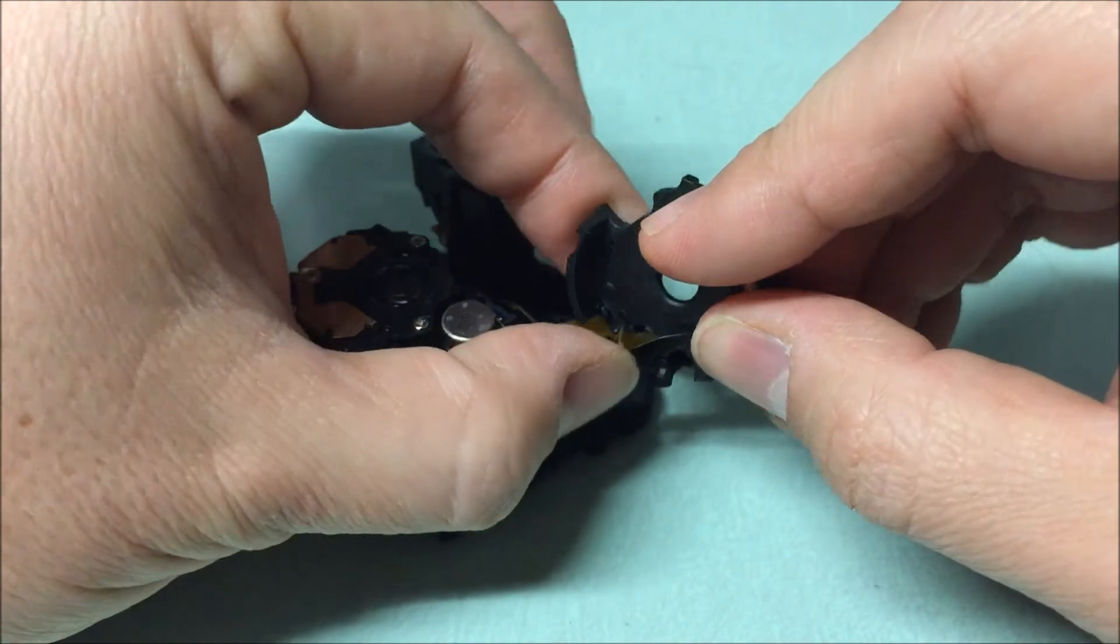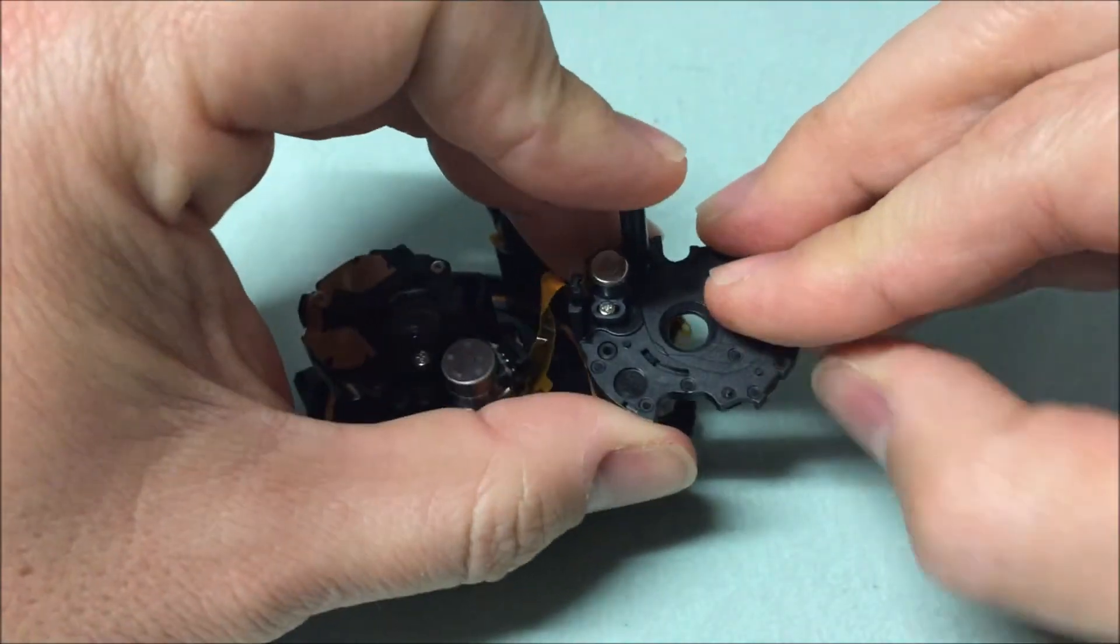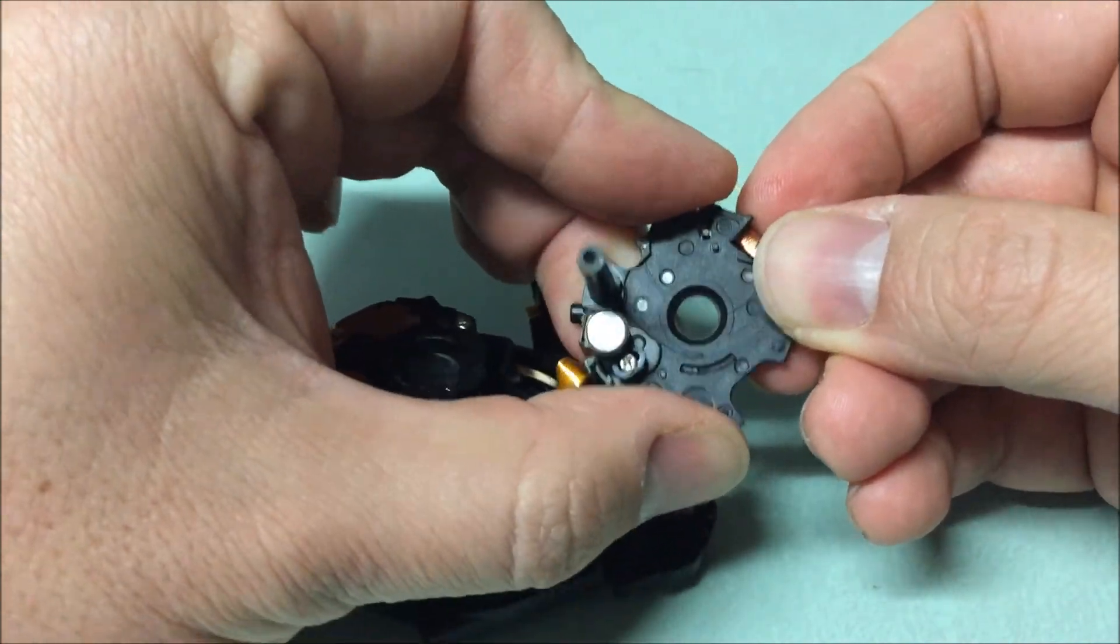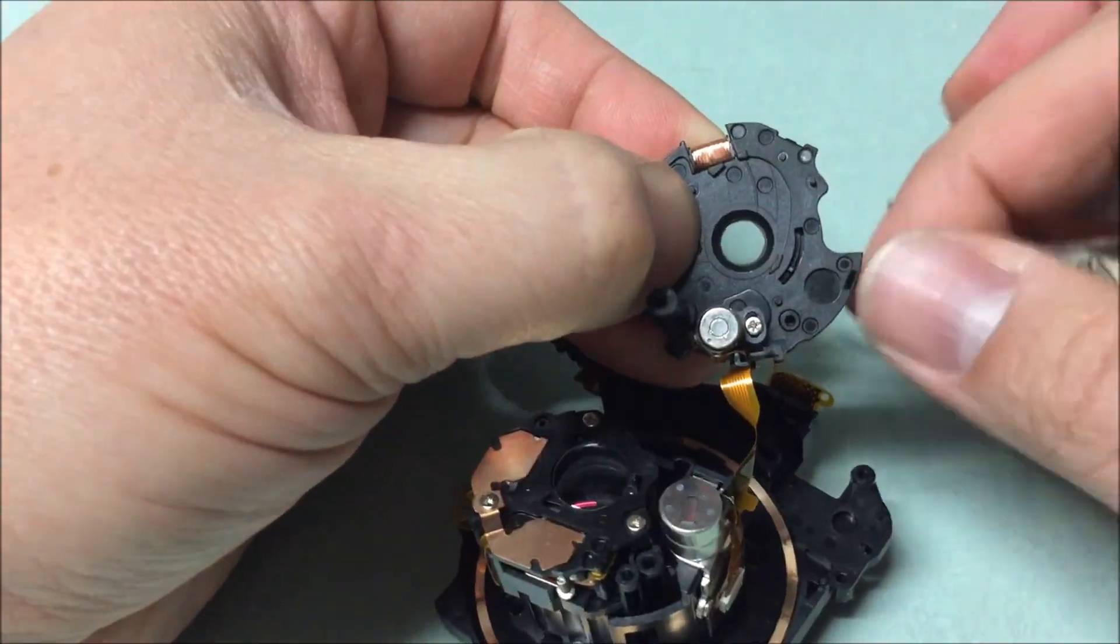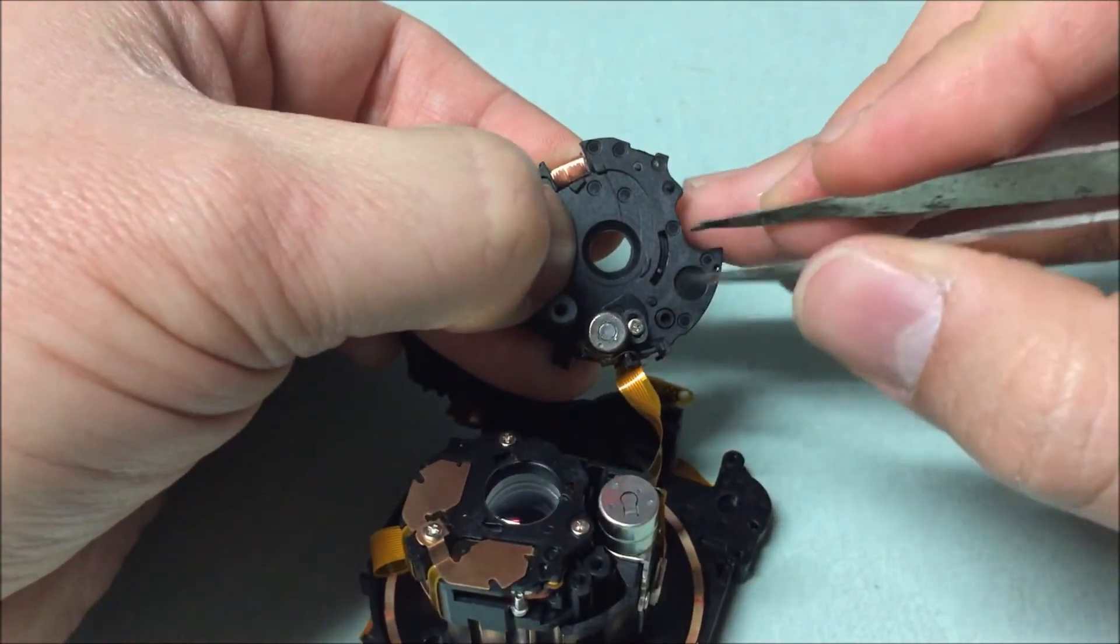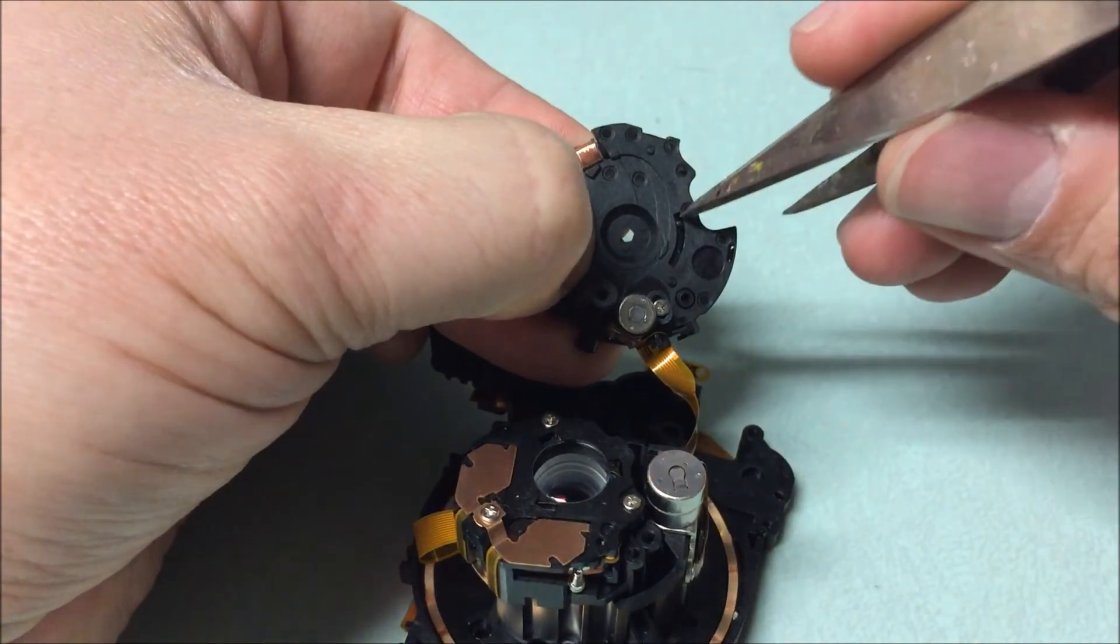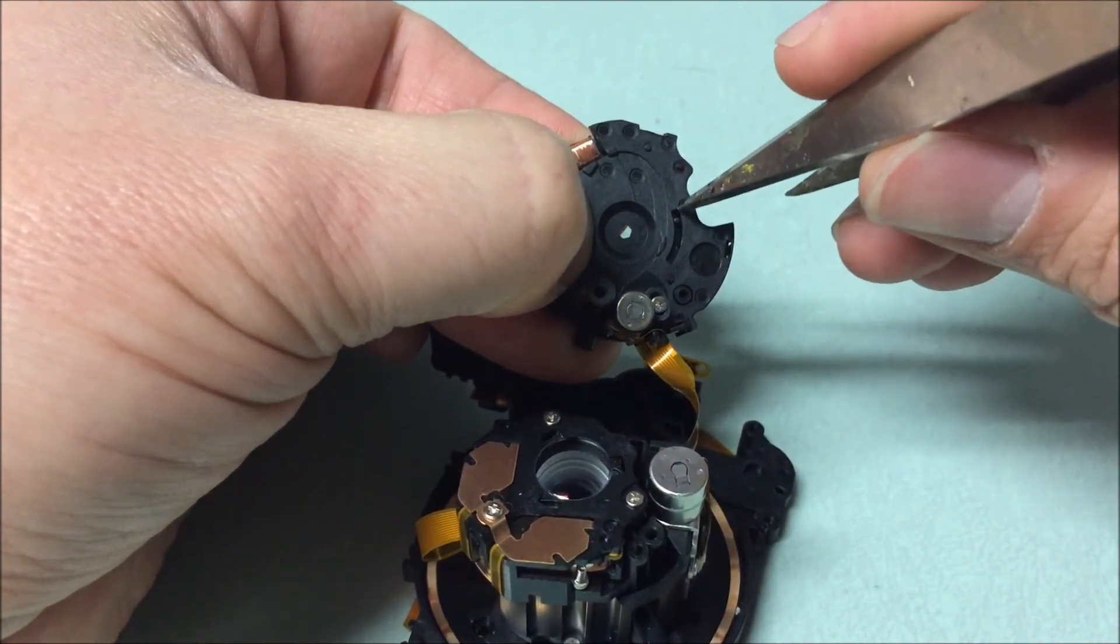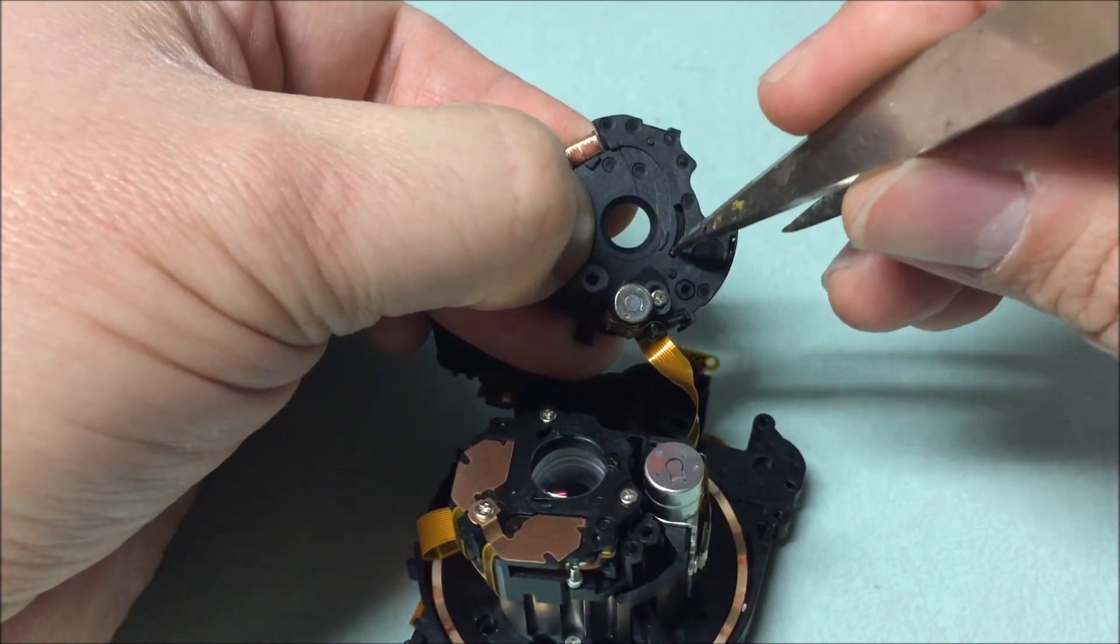Alright, so it looks like we're back together. And the way to check this, make sure you're holding the halves together. We can just slide this tab here back and forth and it looks like all the blades are in place.